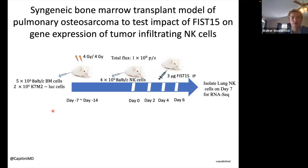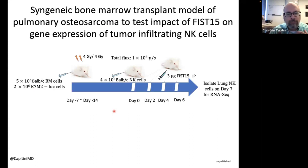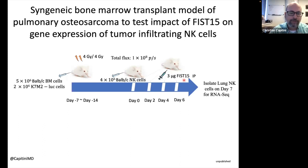A question from the chat: what dose of NK cells are you giving and how frequently? We give one dose of NK cells — 4 million cells — compared to 2 million osteosarcoma cells, roughly a 2:1 effector to target ratio. It's a single infusion of NK cells, but we give multiple treatments every other day of the FIS-15.